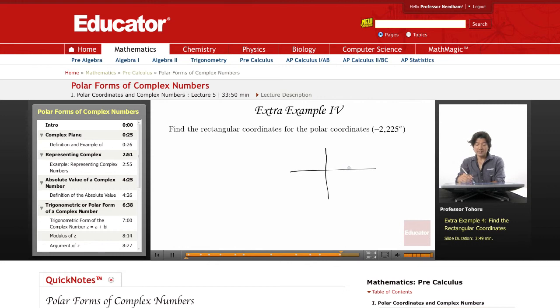A couple ways you can look at it. I like to start with 180 degrees, and then figure out what's left. So 225 minus 180, that's 45 degrees.